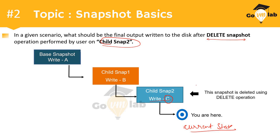Before answering, consider this: when the user performs a delete operation from the current state on child snap 2 with data value C, what happens to that data? Are we going to lose data value C because we are performing a delete snapshot operation, or are we going to retain it?